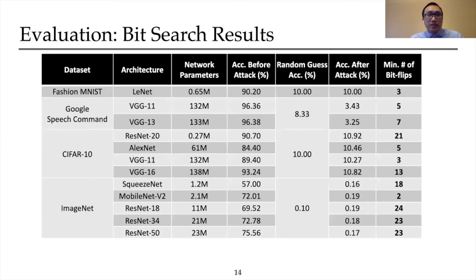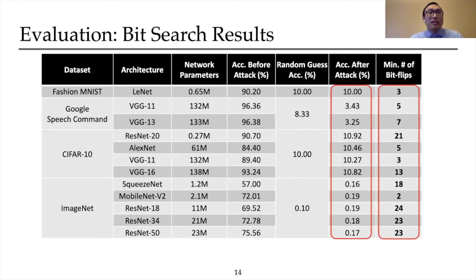Now let's look at the major results. In this table, we show each configuration, the number of network parameters, the accuracy before and after attack, and the minimum number of bit flips needed for the attack. Rowhammer is able to successfully compromise all the DNNs by degrading the inference accuracy either close to or below the random guess level. More notably, to achieve the attack goal, DeepHammer only needs to flip between 2 to 24 bits among models that have up to millions of weight parameters. This shows that the bit search algorithm is highly effective in locating the most vulnerable bits while considering system-level constraints.